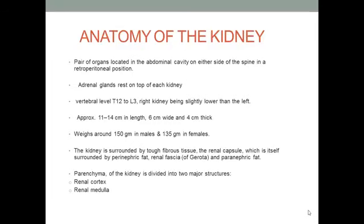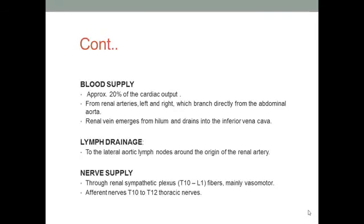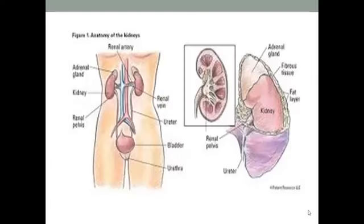The kidney is divided into two major parts: the cortex and medulla. It receives a large blood supply, getting 20 percent of cardiac output from the renal arteries. The lymphatic drainage is around the aortic side, called the para-aortic lymph nodes. Nerve supply is via renal sympathetic fibers around the T10 to L1 level. You can see here the capsule, the perinephric fat, Gerota's fascia, and the two fat layers.